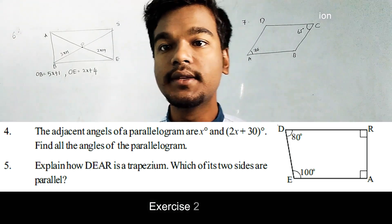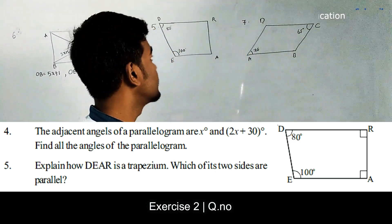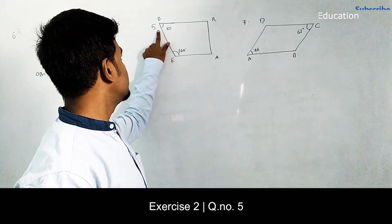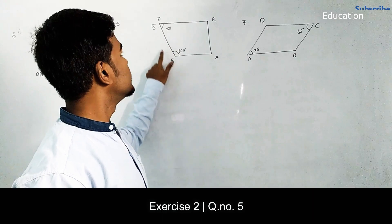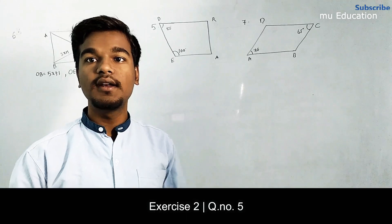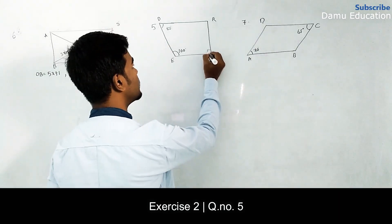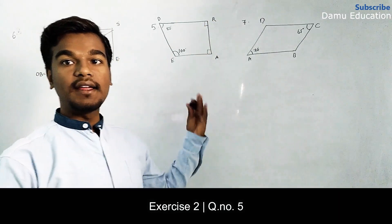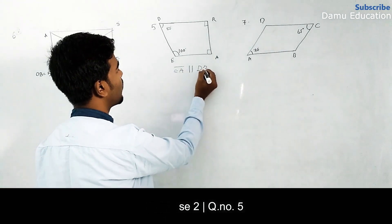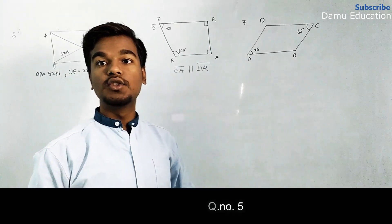For the fifth question, they are given quadrilateral DEDR. They asked: is there any one pair of opposite sides parallel? Yes. E and D are two adjacent angles that make 180 degrees — the sum of two adjacent angles is 180 degrees, so we can call it a quadrilateral. At the same time, EA is parallel to DR, because one angle is 90 degrees, and the sum of two angles equals 180 degrees.